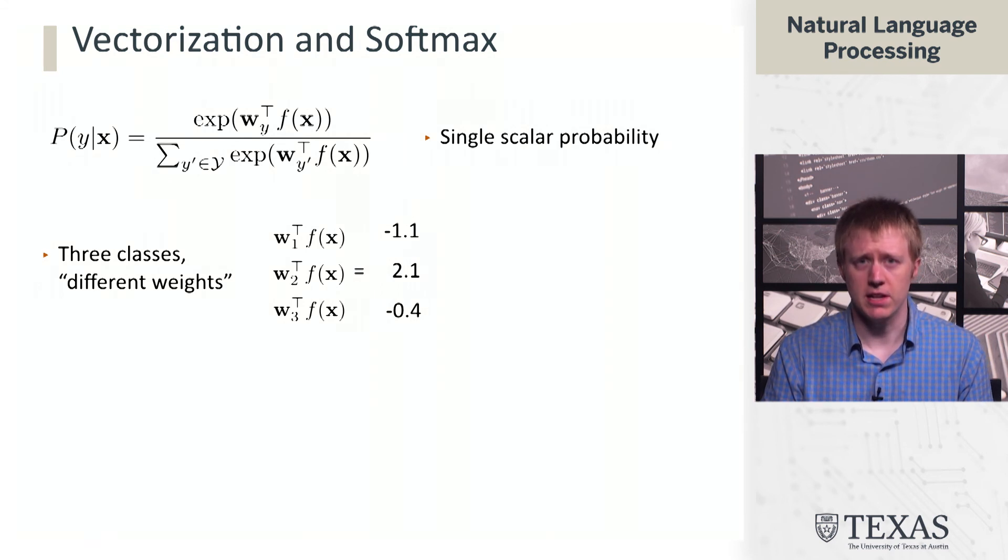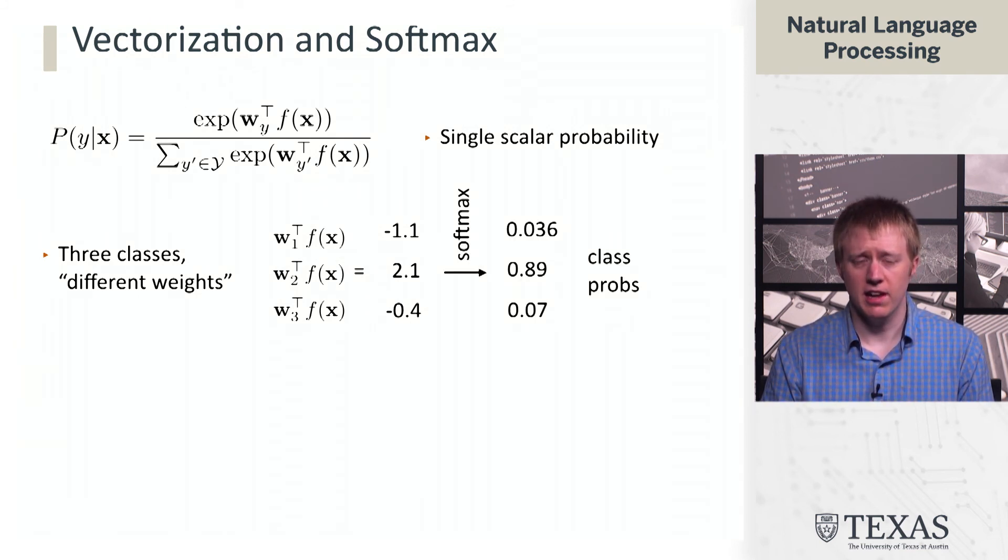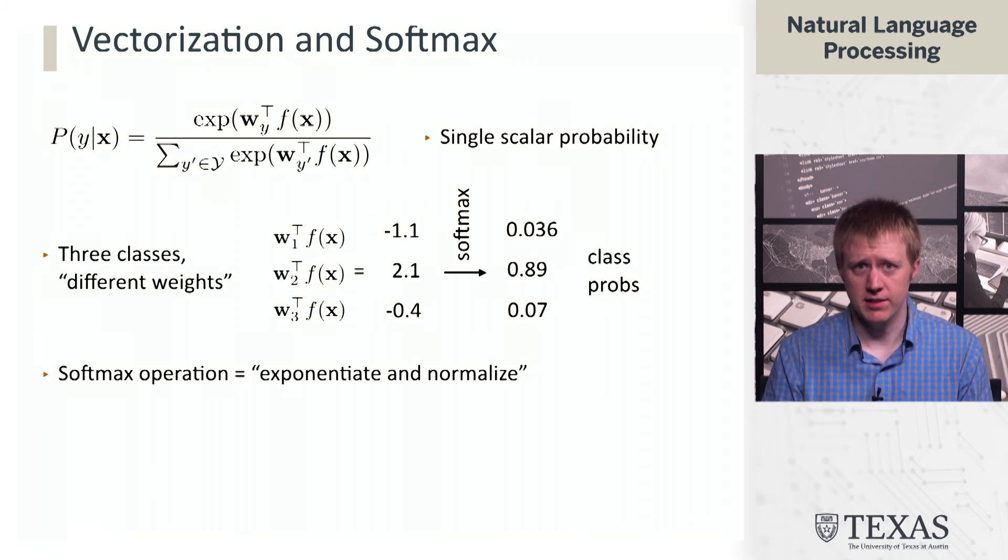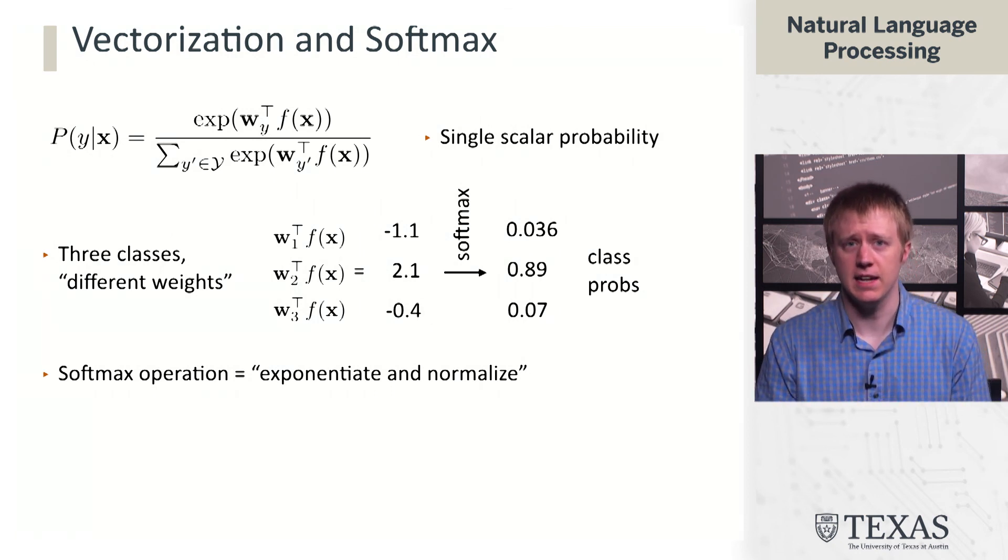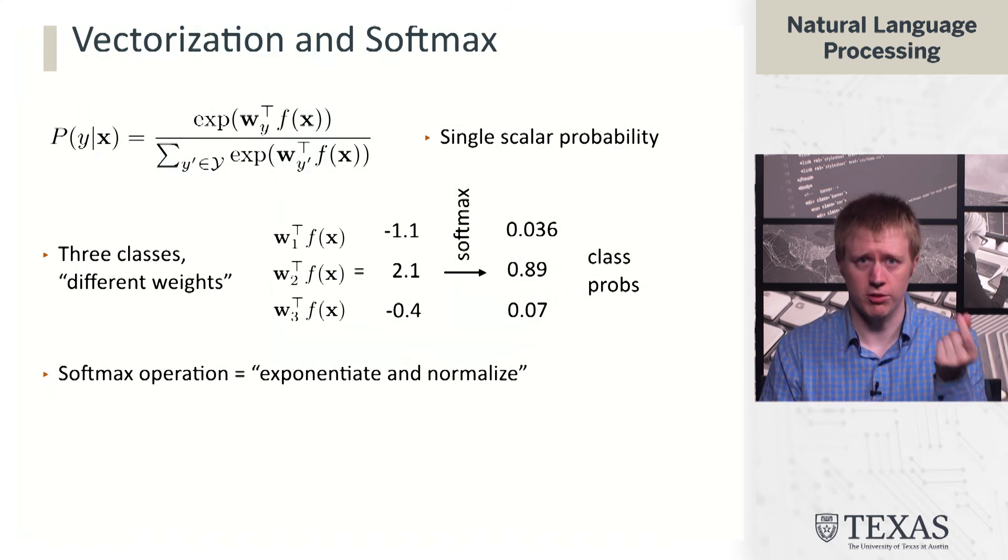When we have three classes and this different weights formalism, each class has a weight vector, and the dot product gives some score. We can transform these into class probabilities using an operation called the softmax. Softmax means take these numbers, exponentiate them, and then normalize them, divide by their sum.